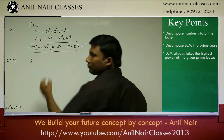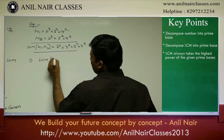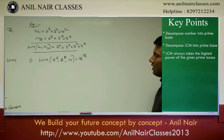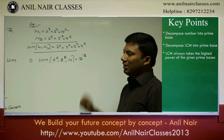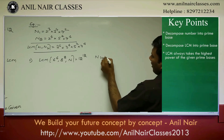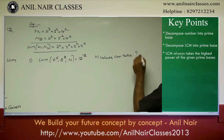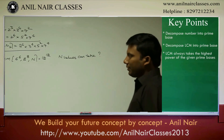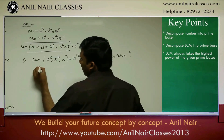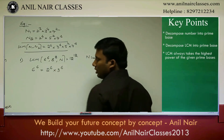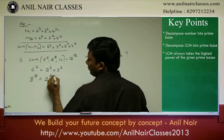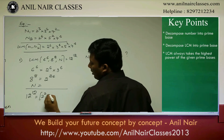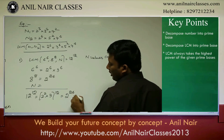First question: LCM of 6 to the power 6, 8 to the power 8, and n equals 12 to the power 12. Generally in textbooks a few numbers are given and we find the LCM — here I've given the LCM and we need to find how many values n can take. First, decompose into prime bases: 6 to the power 6 is 2 to the power 6 into 3 to the power 6; 8 to the power 8 is 2 to the power 24; and 12 to the power 12 — since 12 is 2 squared into 3 — becomes 2 to the power 24 into 3 to the power 12.